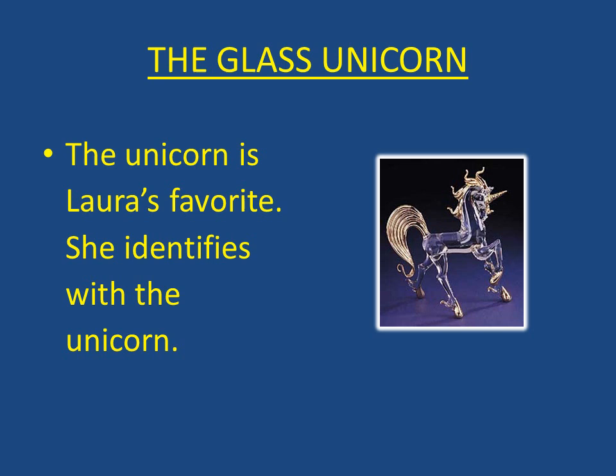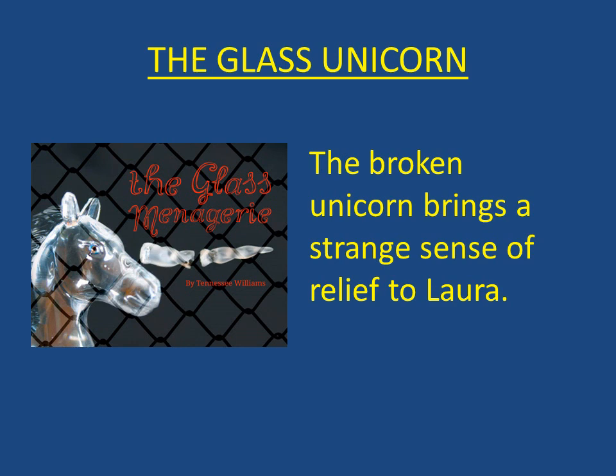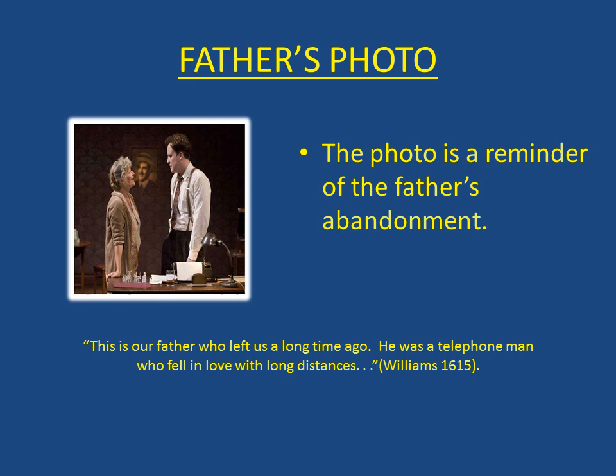The unicorn is Laura's favorite and she identifies with it. The unicorn is different from the other horses because he has a horn, and Laura sees herself as different from other people because of her limb. The broken unicorn brings a strange sense of relief to Laura. When Jim accidentally breaks off the horn of the unicorn, she sees that the animal can be like the other horses — it is no longer a creature of fantasy. Laura, too, can forget her limb and be normal.